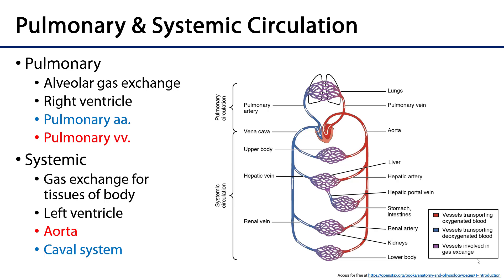The pulmonary circuit is the series of vessels which serve the alveolar capillaries. The major function here is gas exchange in the alveoli. This circuit begins in the right ventricle of the heart. Blood leaves through the pulmonary valve, through the pulmonary trunk, out through pulmonary arteries, eventually to the alveolar capillary beds where gas is exchanged, and richly oxygenated blood returns to the left atrium via pulmonary veins. So in this circuit, pulmonary arteries carry deoxygenated blood and pulmonary veins carry oxygenated blood.